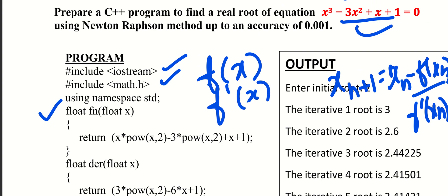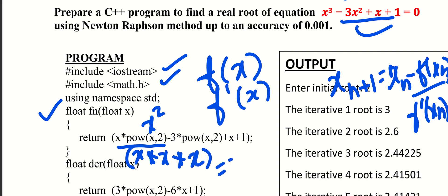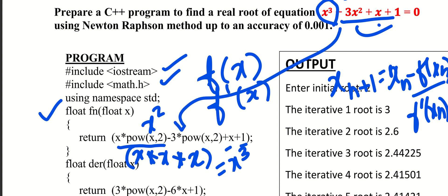Now, x cubed is represented as x multiplied by power of x to 2, which equals x squared times x, equivalent to x cube. So that equation is written as x into pow(x, 2) minus 3 into pow(x, 2), plus x plus 1. This is equal to f of x.